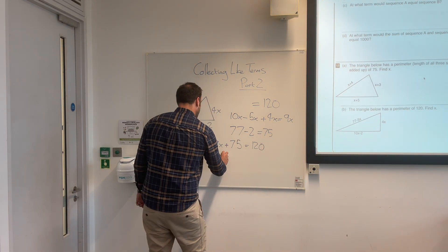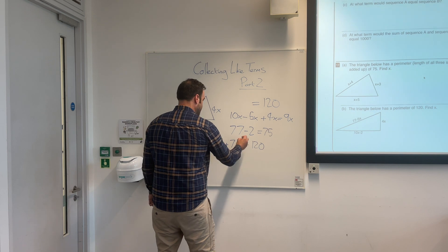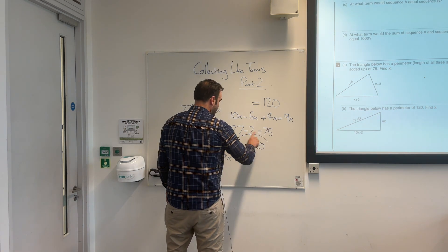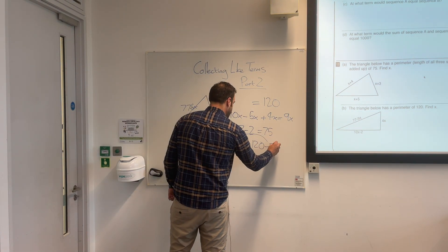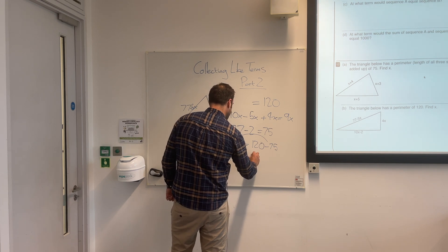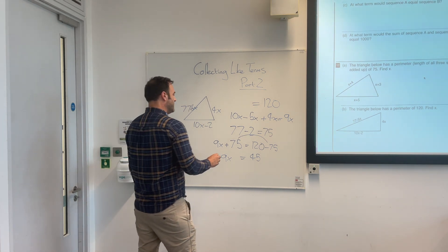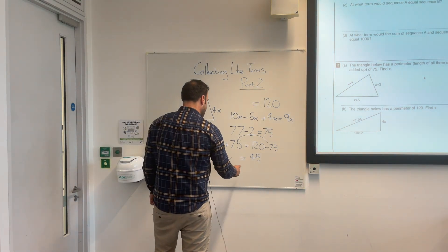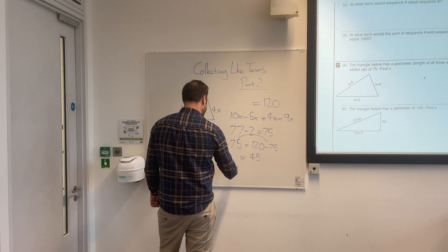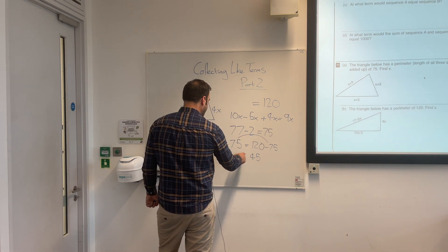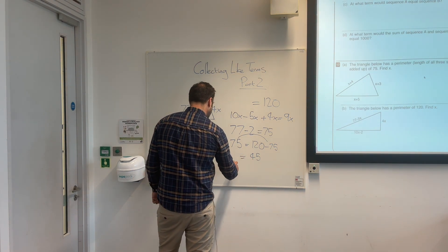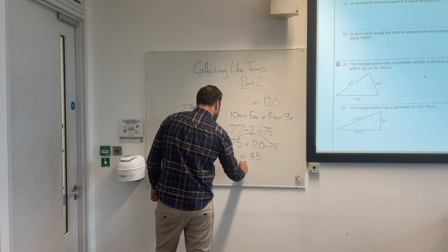So to get 9x, we need to take this over here, do the inverse, equals 45. Then what we need to do is, now we know that 9x is 45, we know that 45 divided by 9 must be x, so x equals 5.